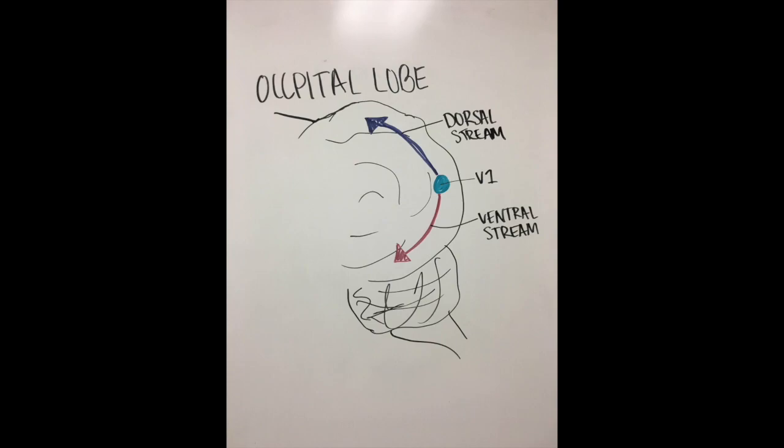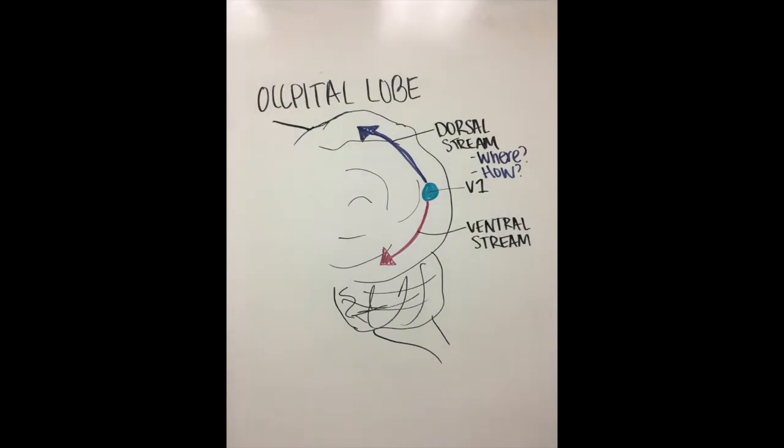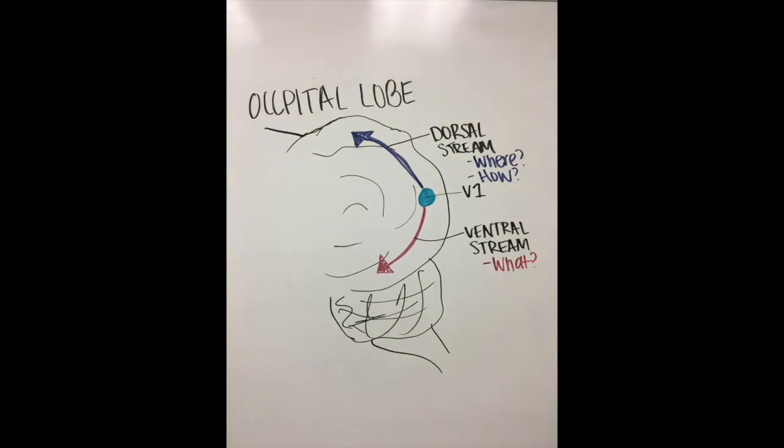Why would we need to separate visual information? Well, our brain uses the dorsal stream to process information regarding where something is and how we should interact with it. Meanwhile, the ventral stream is used to process what something is and helps with identification of objects.